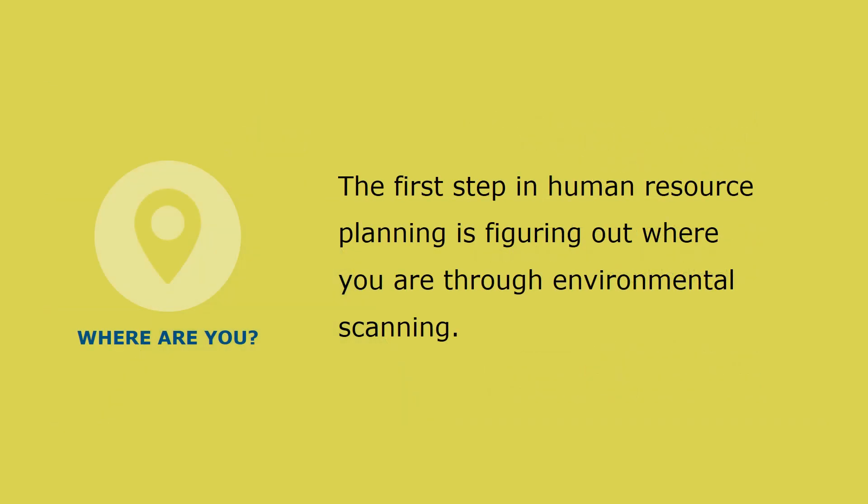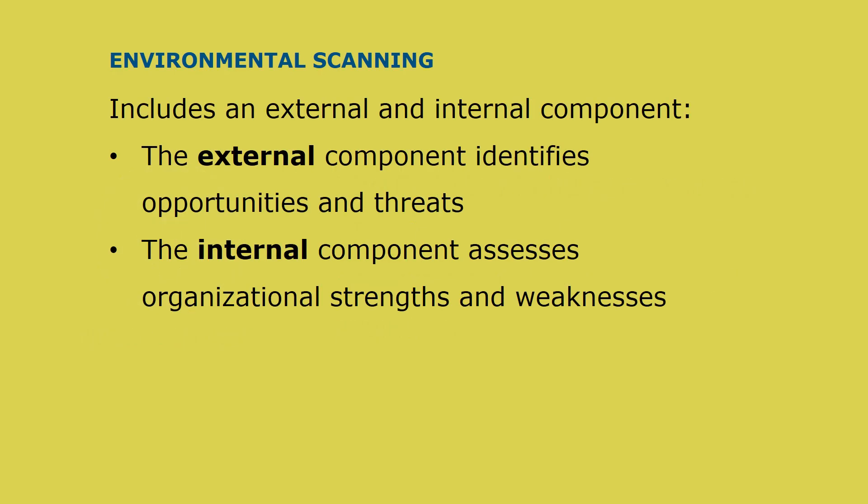The first step in human resource planning is figuring out where you are. We do this through environmental scanning. The scan usually includes an external and internal component. The external component identifies and assesses opportunities and threats in the external environment, while the internal component assesses organizational strengths and weaknesses. This process is often referred to as SWOT — strengths, weaknesses, opportunities, and threats. Completely scanning the environment and discussing the results adds value in defining and refining strategy, goals, and action.